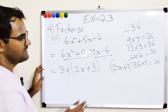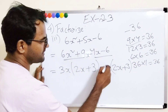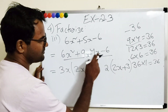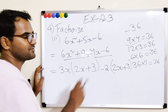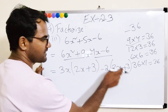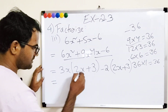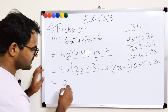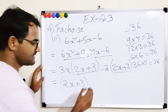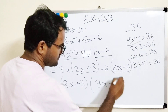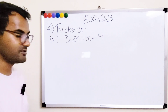For the second group minus 4x minus 6, we write the same bracket (2x + 3), so we need minus 2 outside: minus 2(2x + 3). Minus 2 × 2x = minus 4x and minus 2 × 3 = minus 6. Both groups share (2x + 3), so the answer is (2x + 3)(3x minus 2).